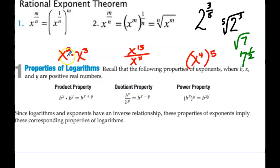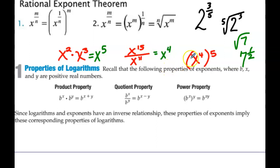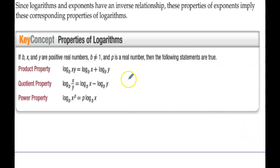Additional properties of exponents: if you have x squared times x to the 3rd, what happens? x to the 5th. Multiply here means add. And division means subtraction. A power of a power — x to the 4th raised to the 5th — you multiply, and you end up with x to the 20th. Everybody good with those?